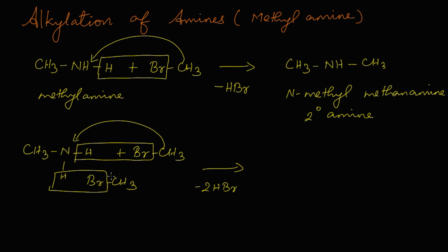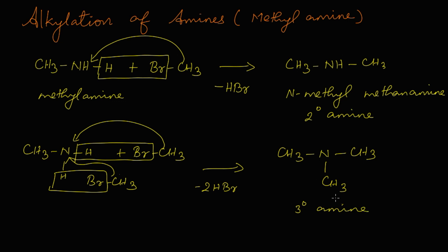The remaining CH3 groups get attached to the nitrogen — one CH3 to each bond — so we get a tertiary amine: CH3-N(-CH3)-CH3. This is a tertiary amine. The name of this compound is N,N-dimethyl methanamine.